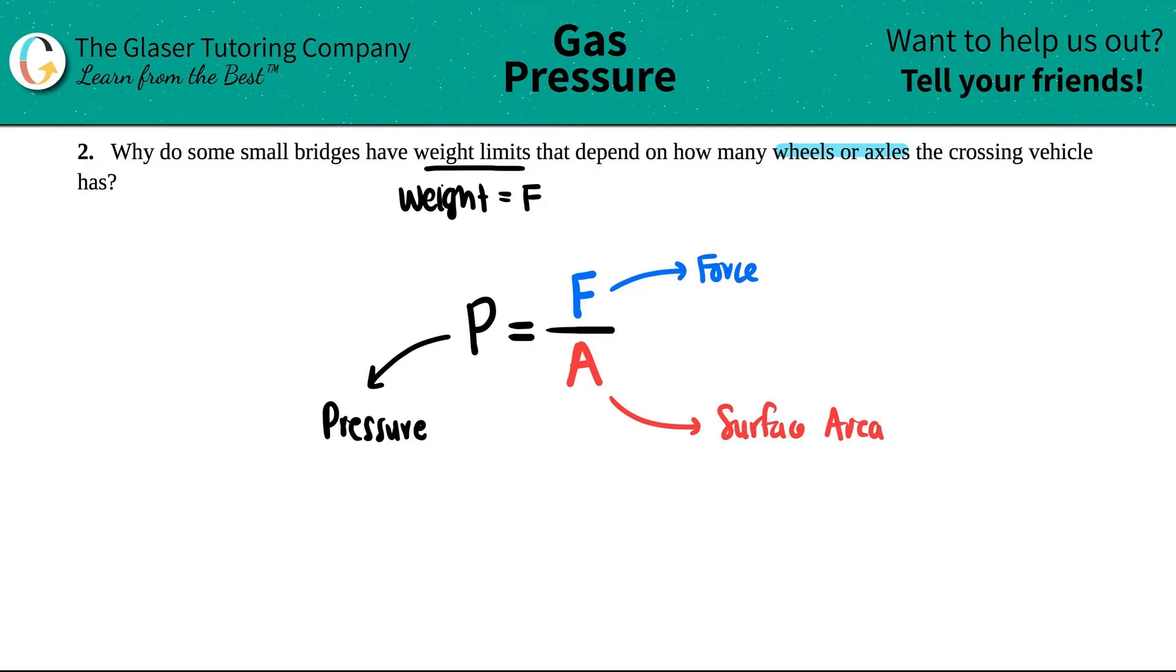So if we're talking about wheels or axles of a crossing vehicle, let's put two things together, right? So let's just say that I'm trying to cross over this bridge. Here's my lovely bridge—oh my goodness, here's my lovely bridge. And let's just say, you know, wow, what a lovely bridge. I have no idea what I just drew, but it's supposed to be a bridge. Okay, there it is, it's three-dimensional.